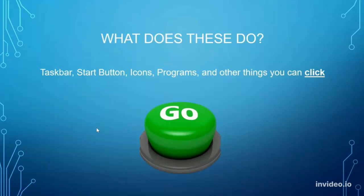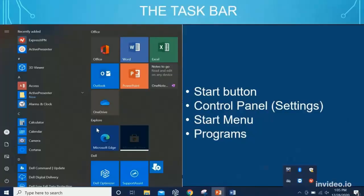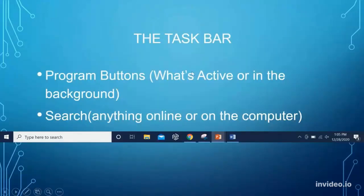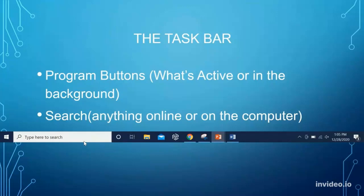Now we're going to go over the taskbar, the start button, the icons, the programs, and everything you can click on in Windows 10. Clicking the bottom left button — that's the start button — opens up this menu, the control panel or the settings, with all the programs you can go through. Down at the bottom is the taskbar, and over here is the system tray. All the program buttons are down here along with your search button. You click the search bar and type whatever you're looking for — even things on the internet or files on your computer. This search bar does it all.